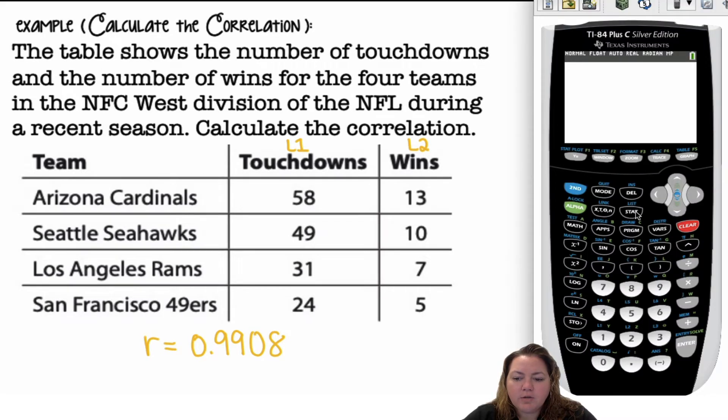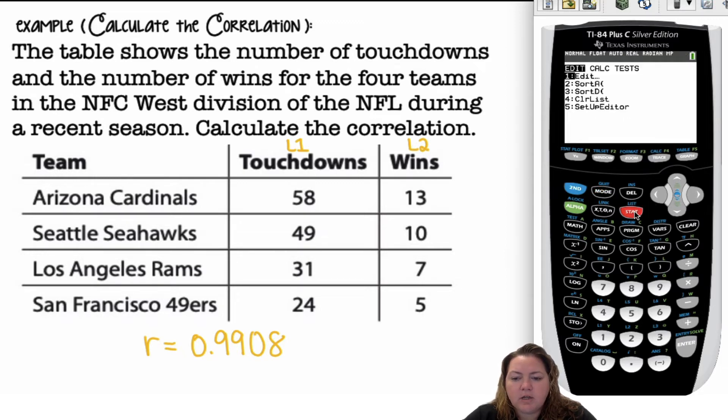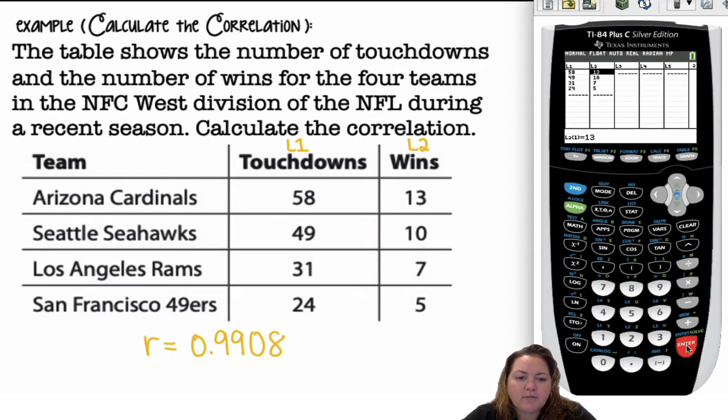In the calculator, we're going to first turn stat diagnostic on. Once you turn this on, if you don't reset your calculator, it will still be there. Scroll down until you see stat diagnostic, switch it to on and click enter. Once that's on, it'll stay on unless you reset your calculator. Then go to stat, edit, and put your x values into list 1, number of touchdowns, and your y values into list 2, number of wins.